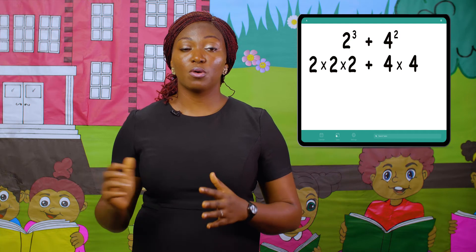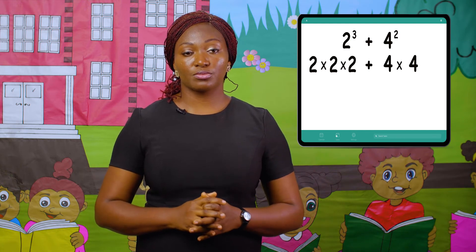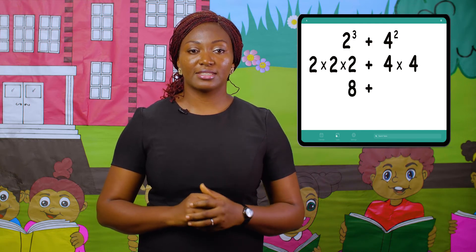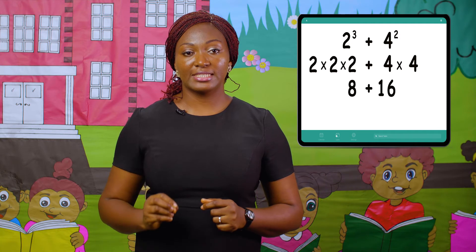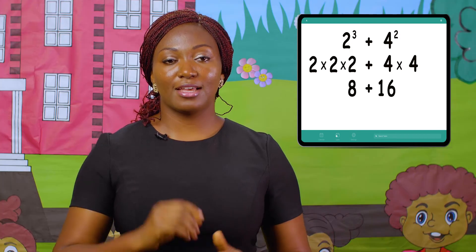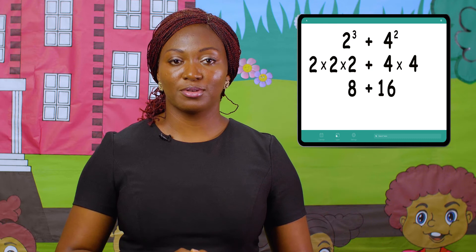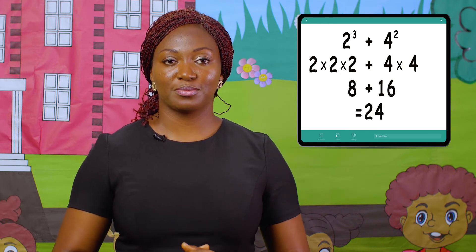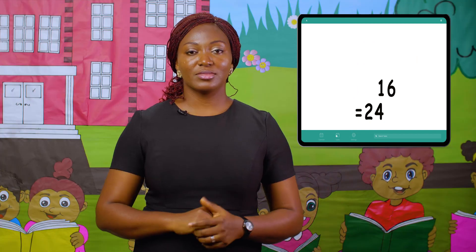Let's solve: 2 times 2 times 2 is 8, and 4 times 4 is 16. Therefore, 8 plus 16 gives us 24, and that is the answer. Let's try a subtraction question.